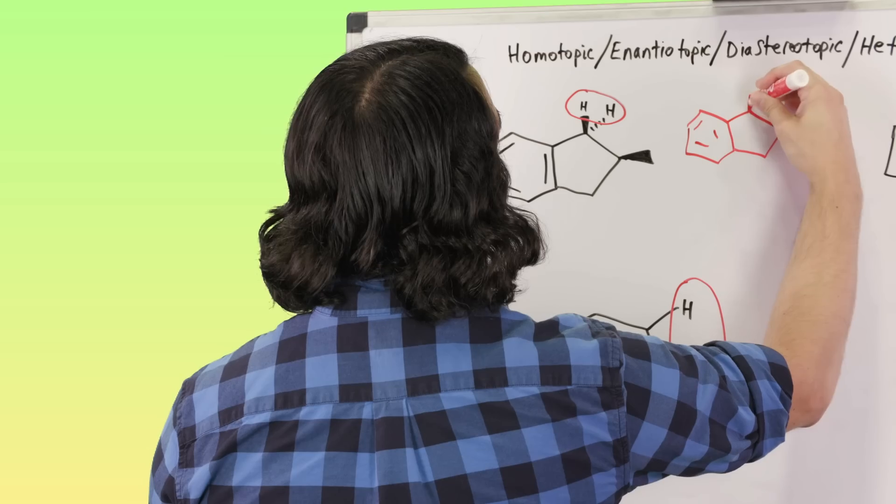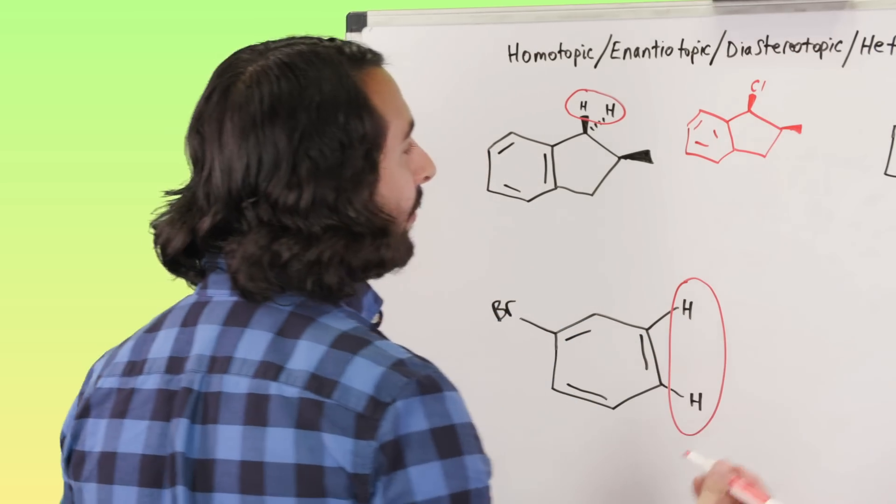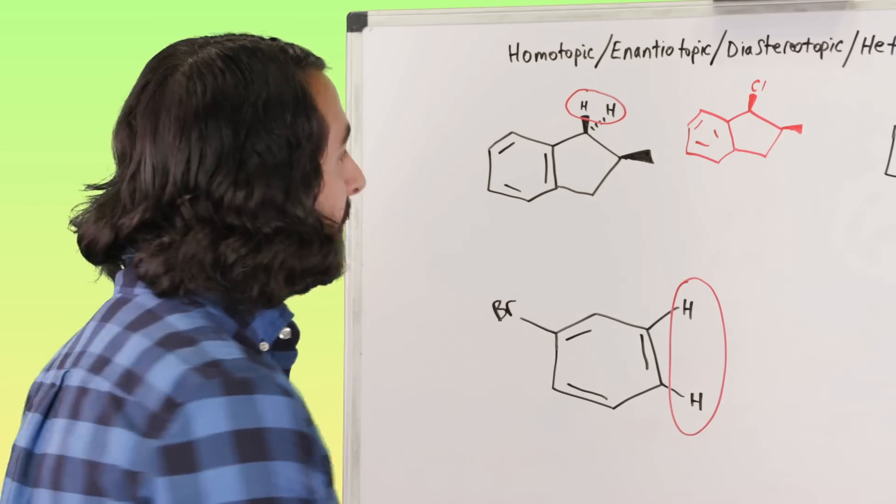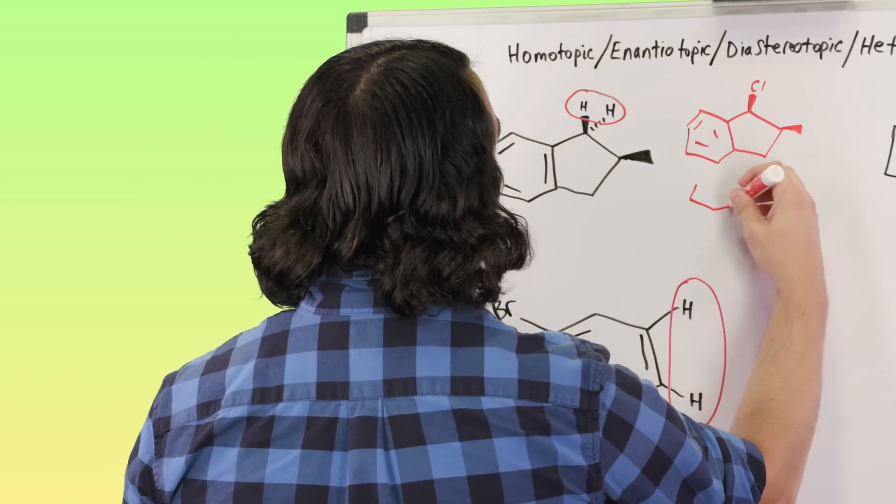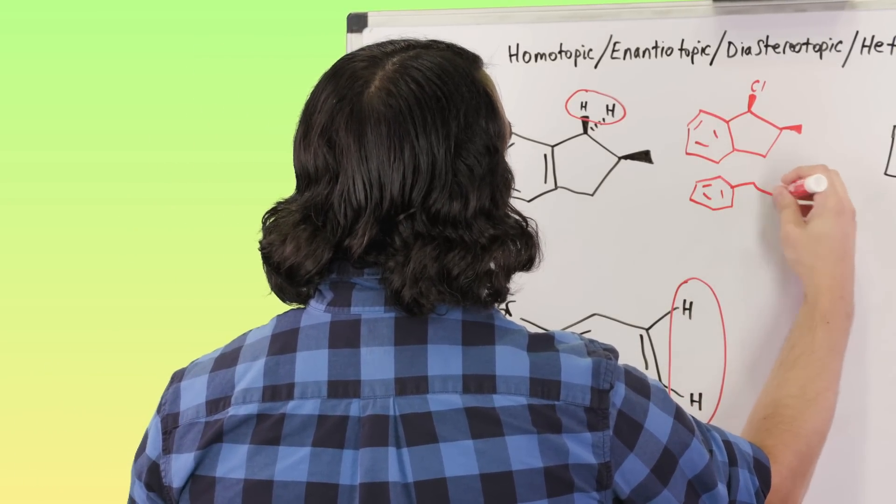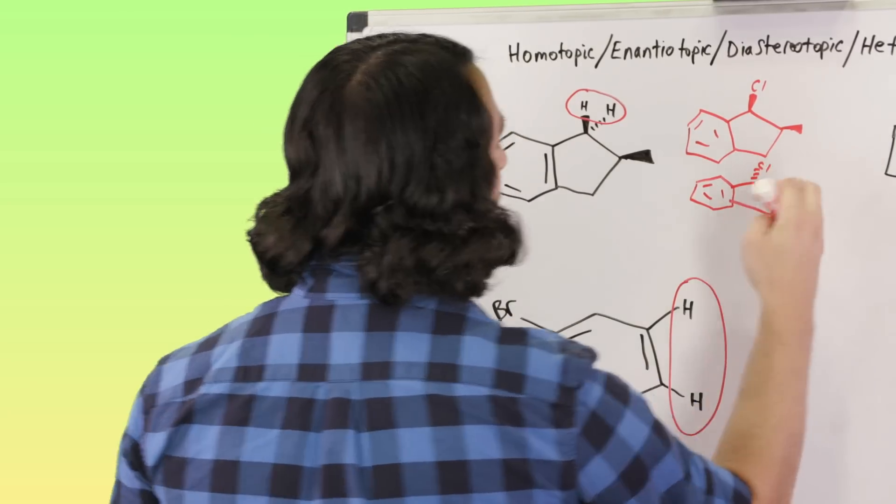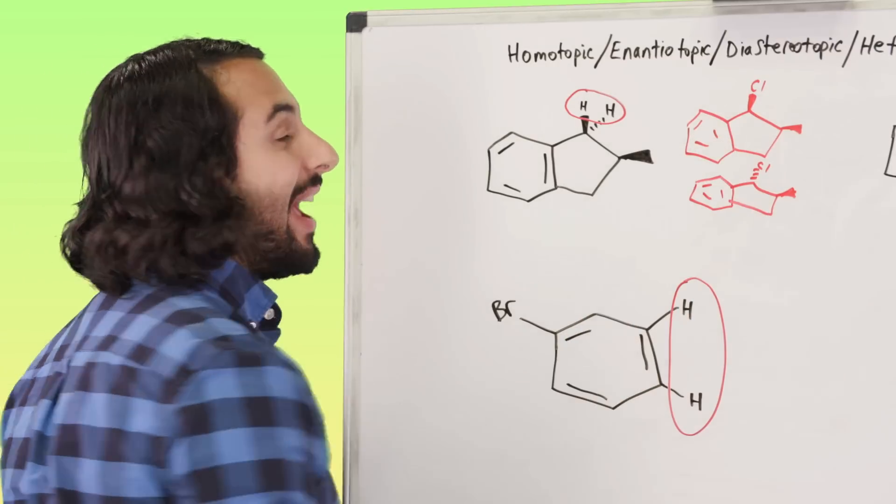But with one of these hydrogens as, let's say, chlorine. Now what we've done is we've definitely generated a new chiral center, right? And if we draw the other version we can see that we would be generating the opposite stereochemistry at that chiral center.